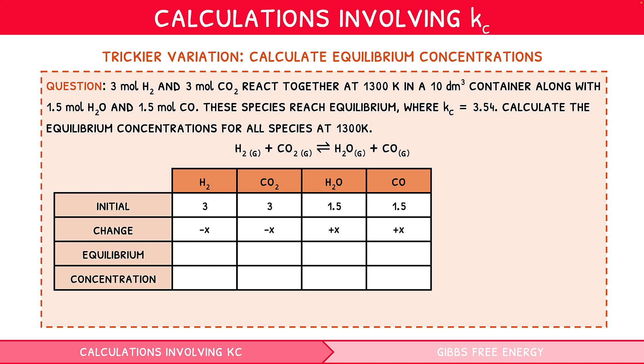We can therefore express the equilibrium molar quantities for each species using this change: 3 minus X, 3 minus X, 1.5 plus X, and 1.5 plus X. To calculate the concentration, again, we use the formula concentration equals moles divided by volume. The reaction container was again 10 decimetres cubed, so we divide each value by 10 to give expressions for the equilibrium concentrations of each species. Now that we have expressions for the equilibrium concentrations of all species, we can substitute these into an equation for Kc, which we are told is equal to 3.54. So, our equation for Kc would be 3.54 equals H2O times CO over H2 times CO2. Substituting in our expressions, we can create the following.